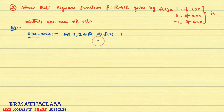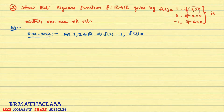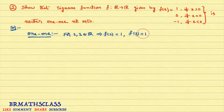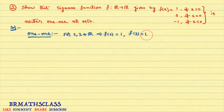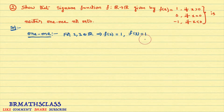f(3): since 3 > 0, the function gives value 1, so f(3) = 1. Two and three are different elements, but they have the same image. But as per the definition of one-one function, different elements must have different images. Here, different elements are having the same image, so the function is not one-one.